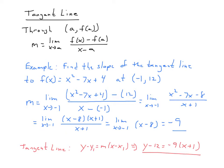For example, we want to find the slope of the tangent line to f(x) equals x squared minus 7x plus 7 at the point (−1, 12). In this case, a is −1. Using the definition, m is the limit as x approaches −1 of f(x), which is x squared minus 7x plus 4, minus 12, all over x minus (−1). Combining like terms and simplifying, that becomes the limit as x approaches −1 of x squared minus 7x minus 8 over x plus 1. Now I have to factor this.